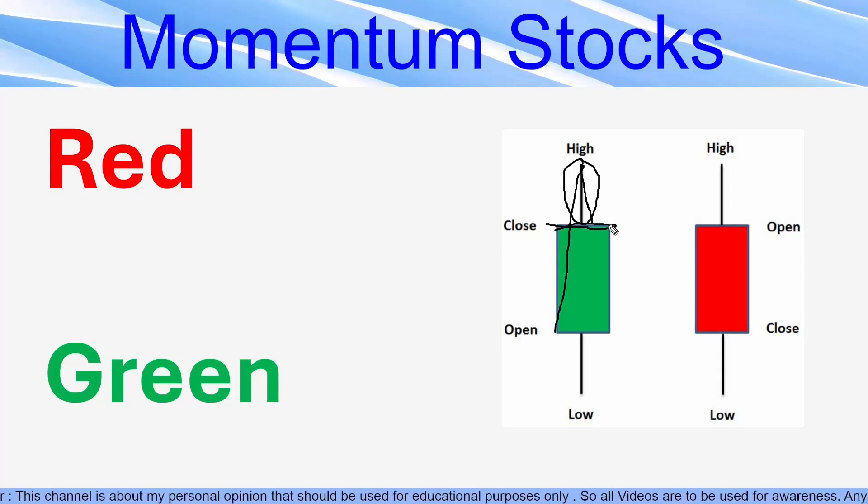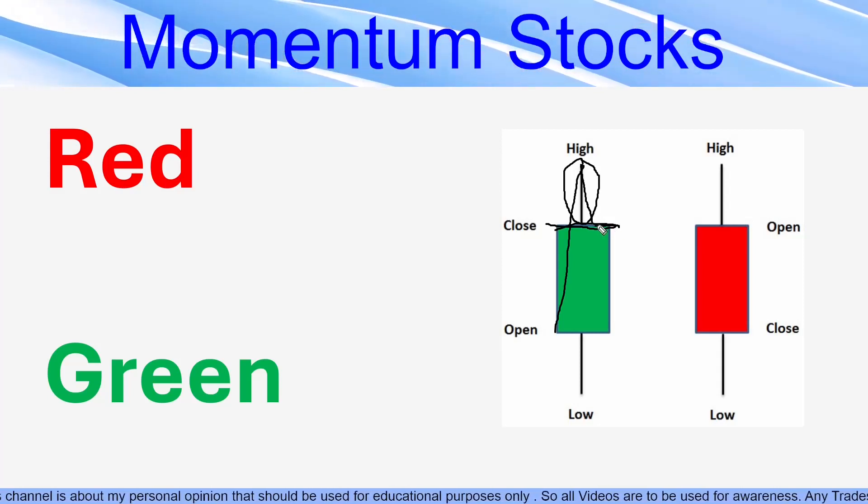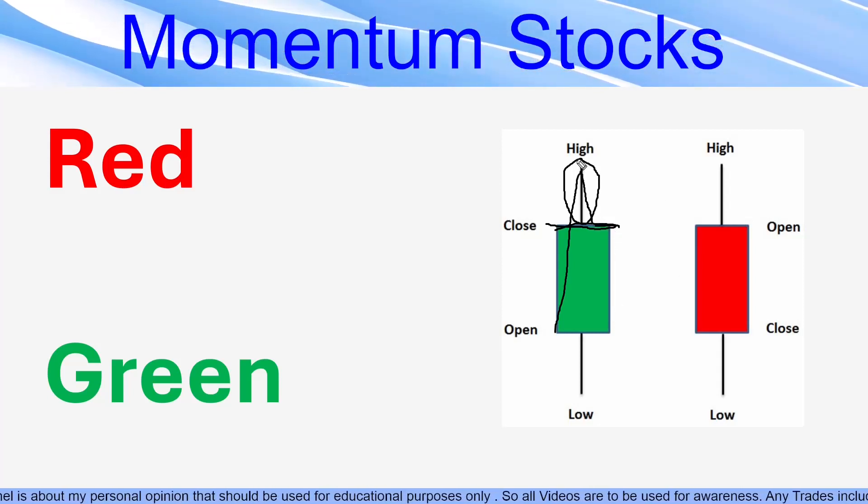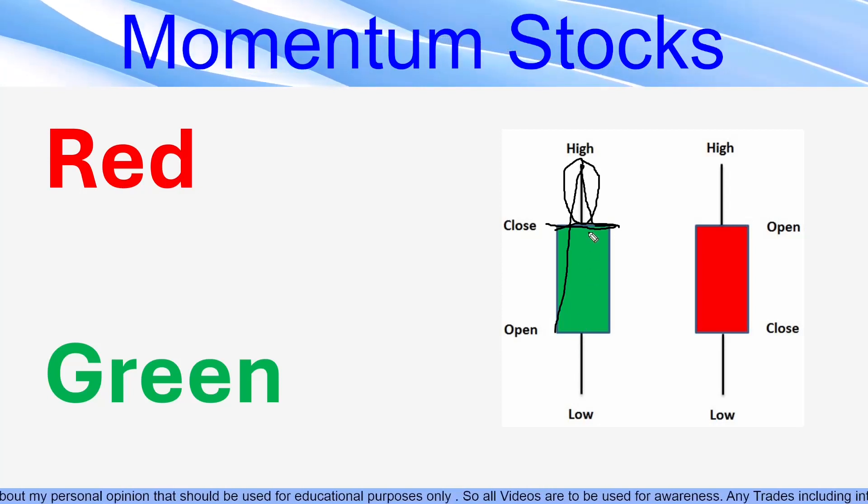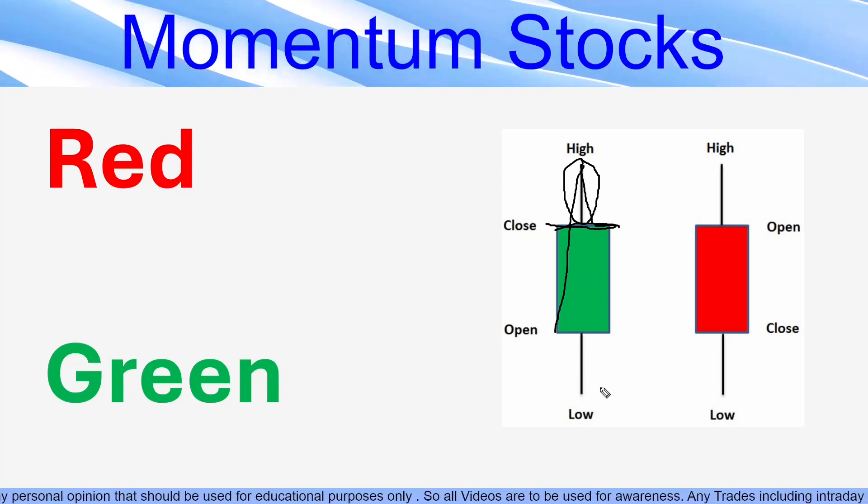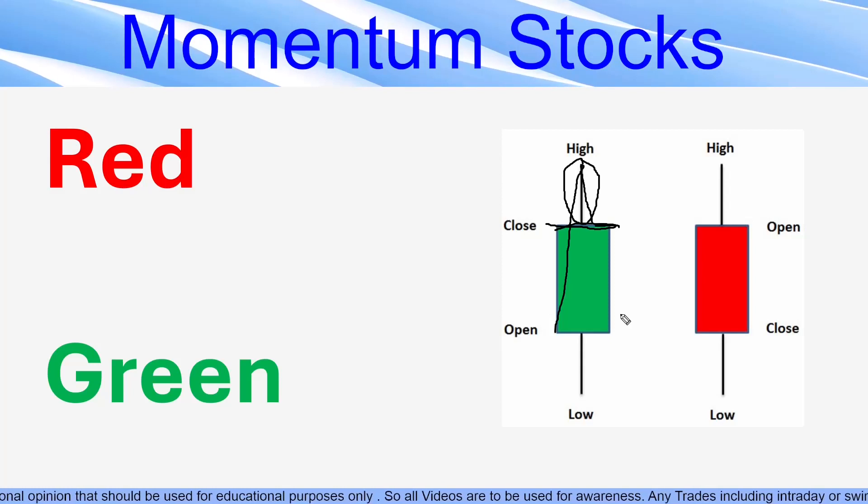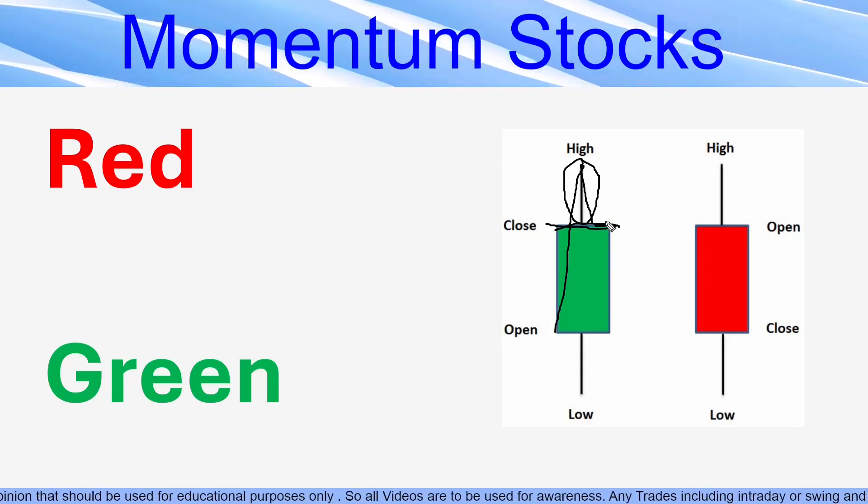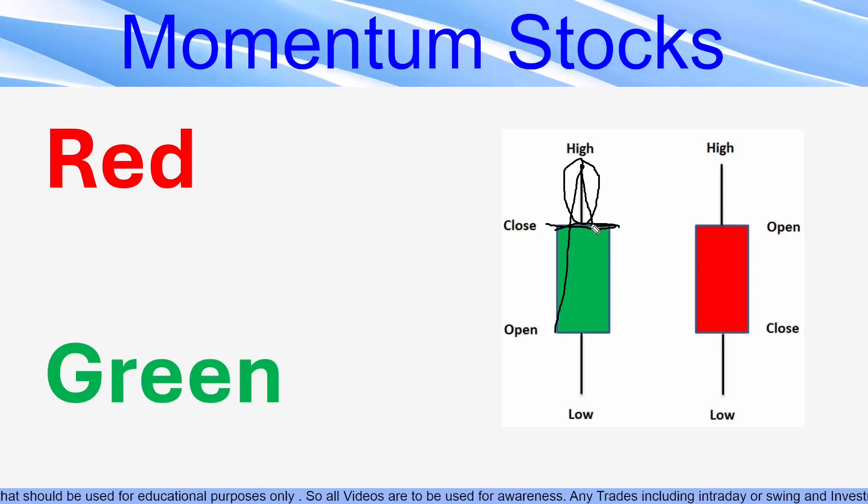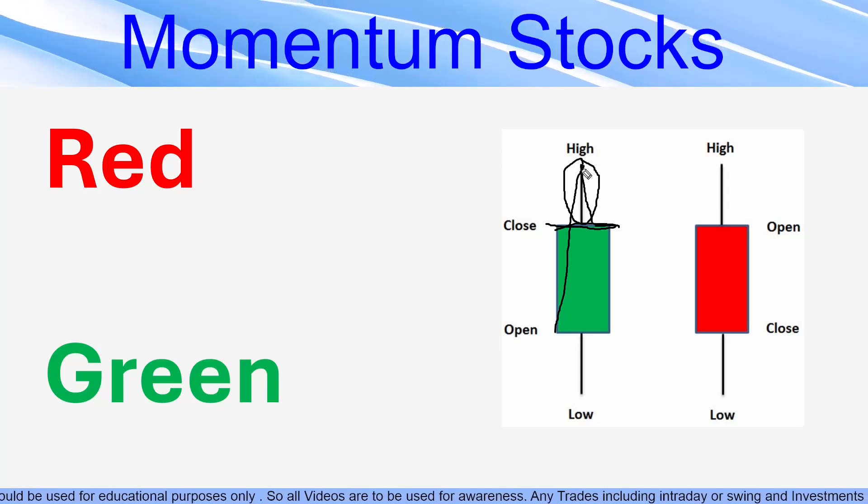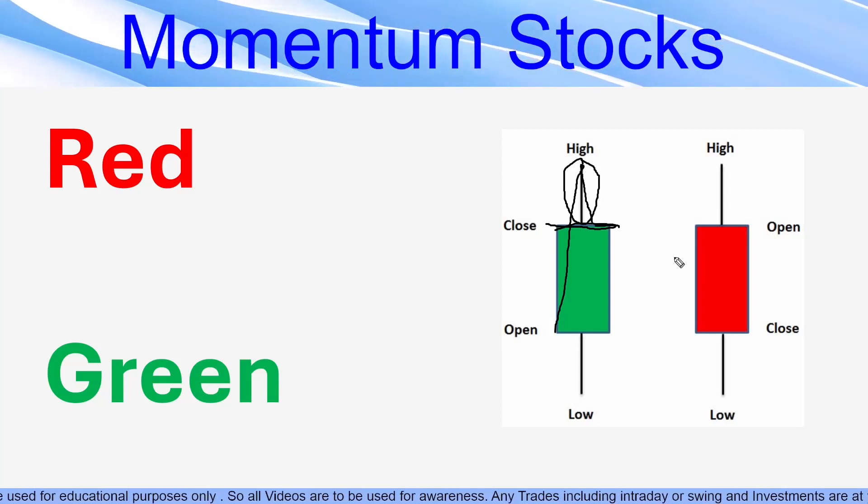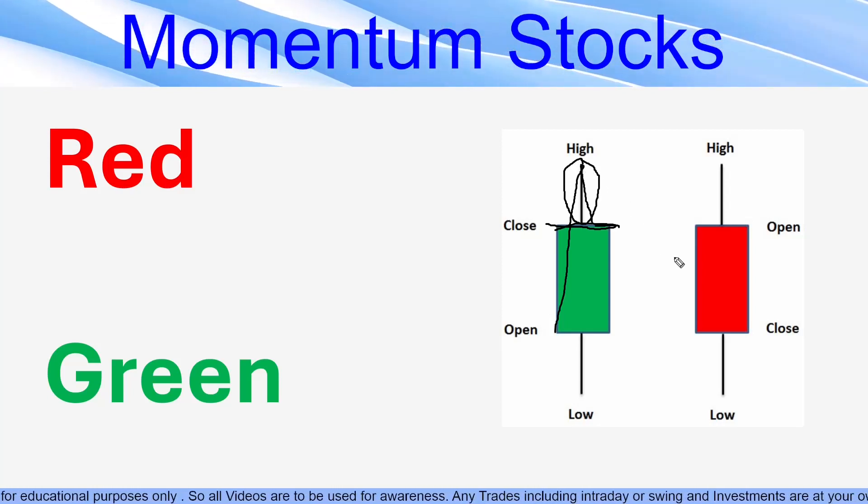It came back. And by the time it closed, it closed here. That is the meaning of these wicks. It went till that area, but could not sustain those levels. And so it came back. So during that interval, the stock has touched those levels, but could not stay there. That is the importance of a wick.